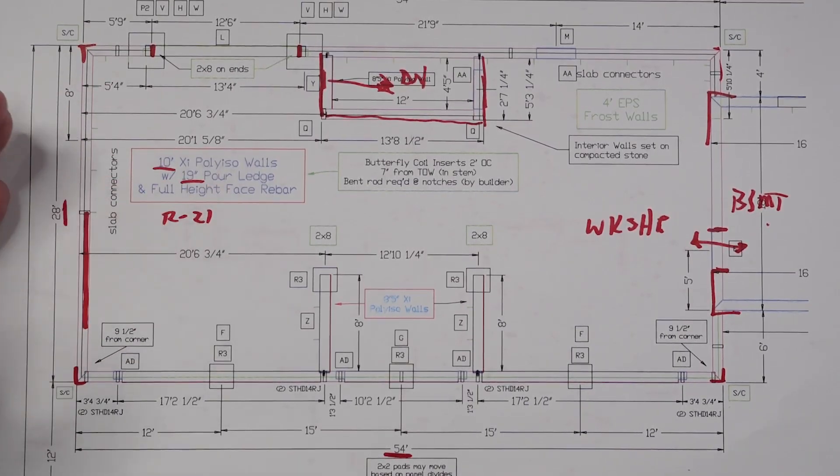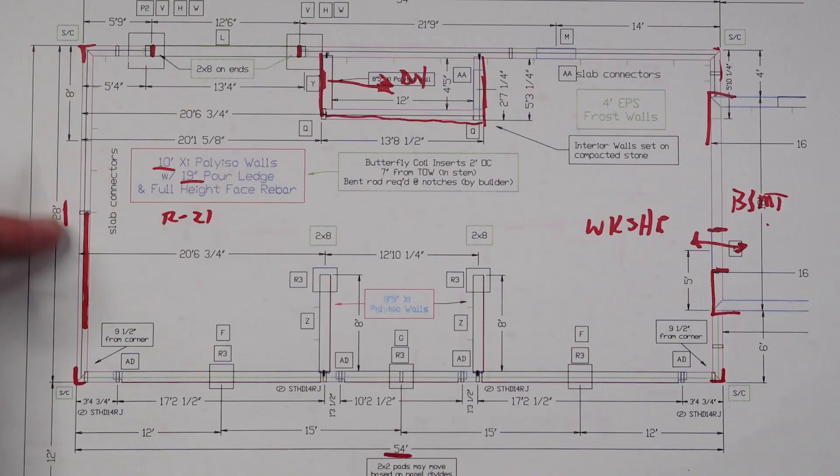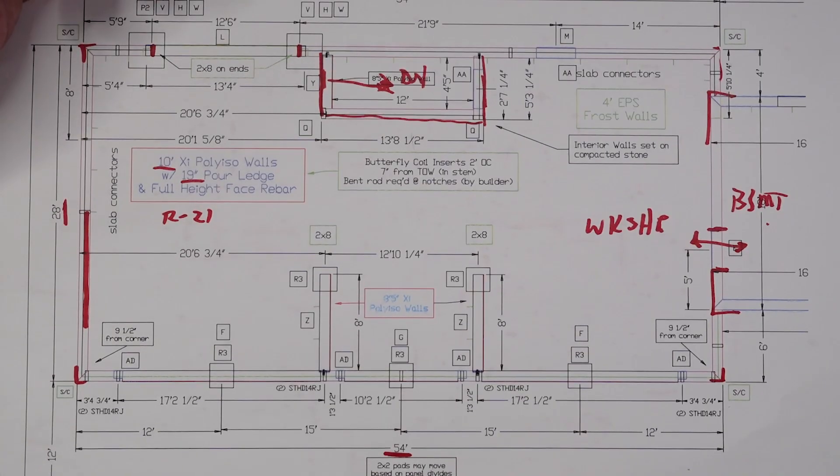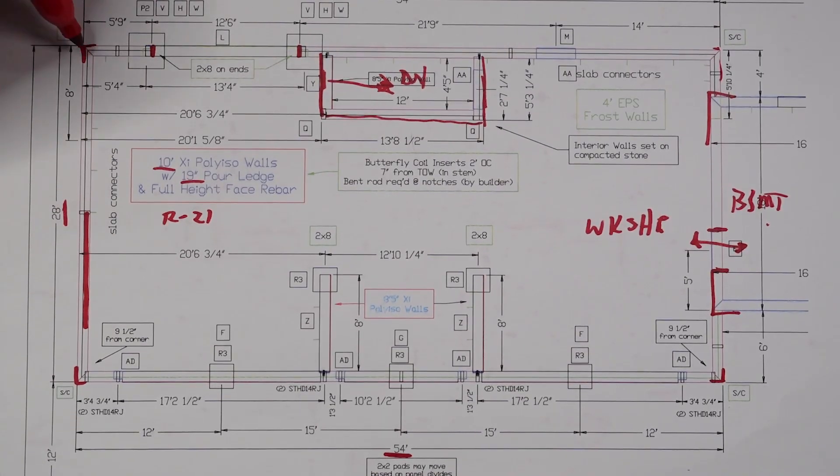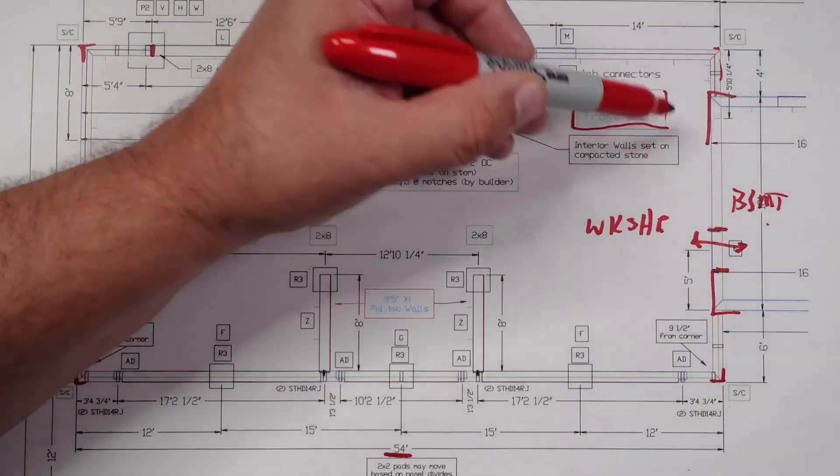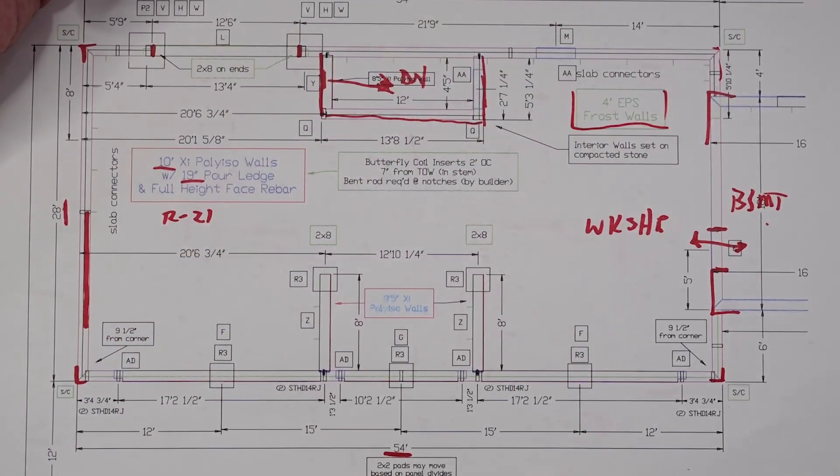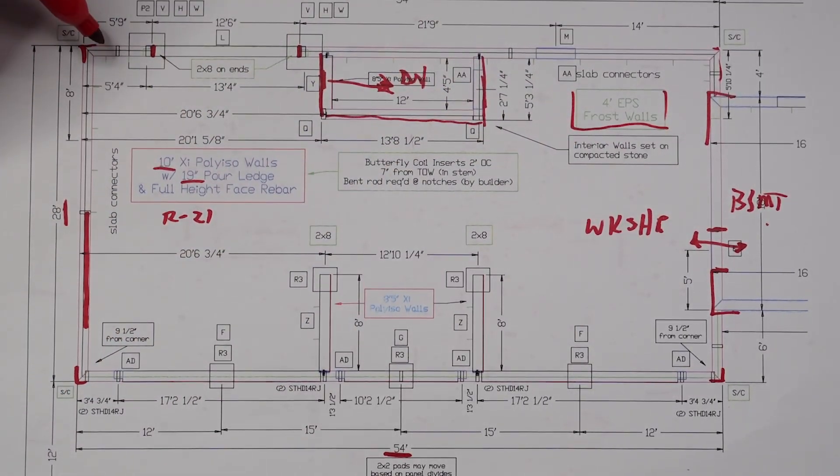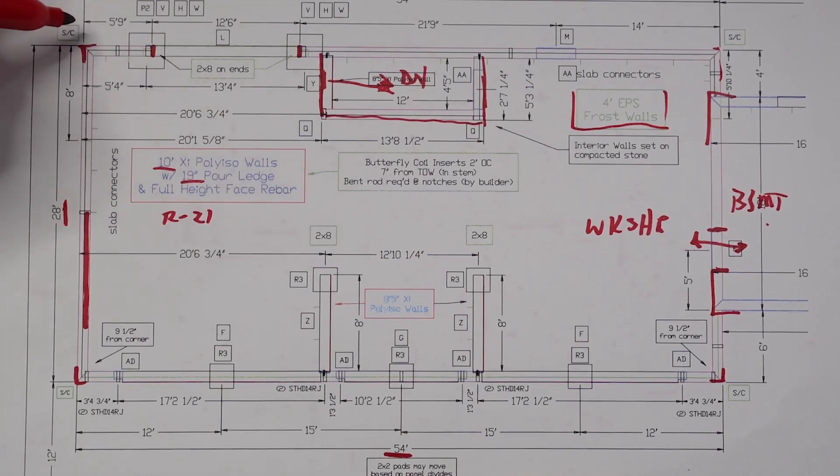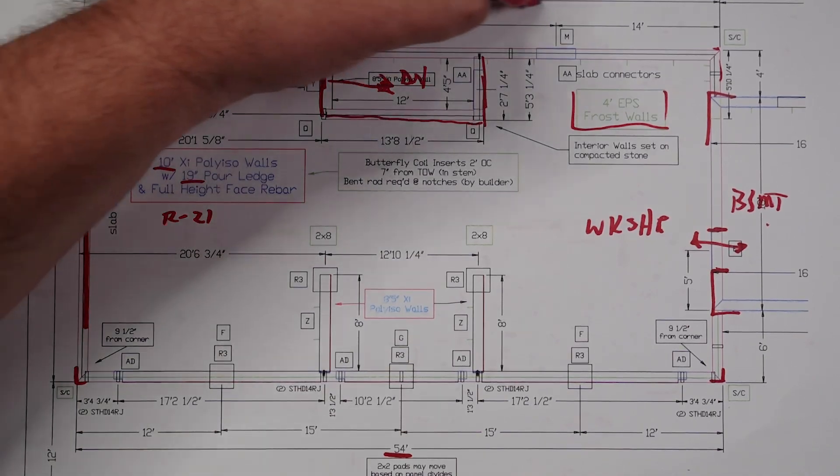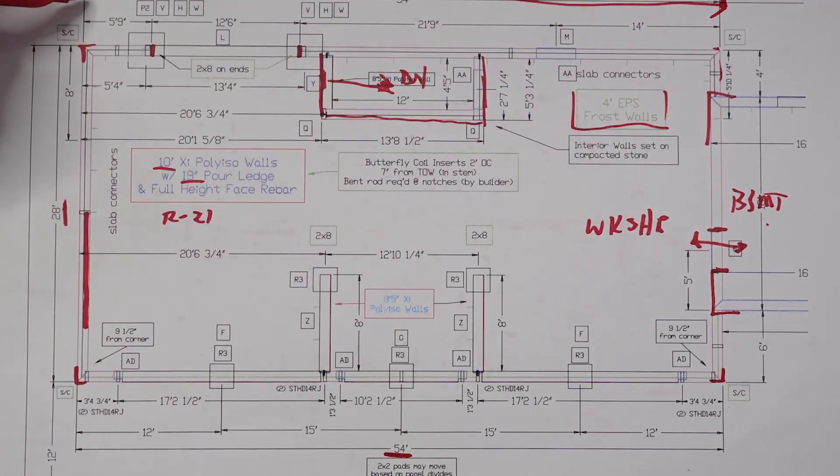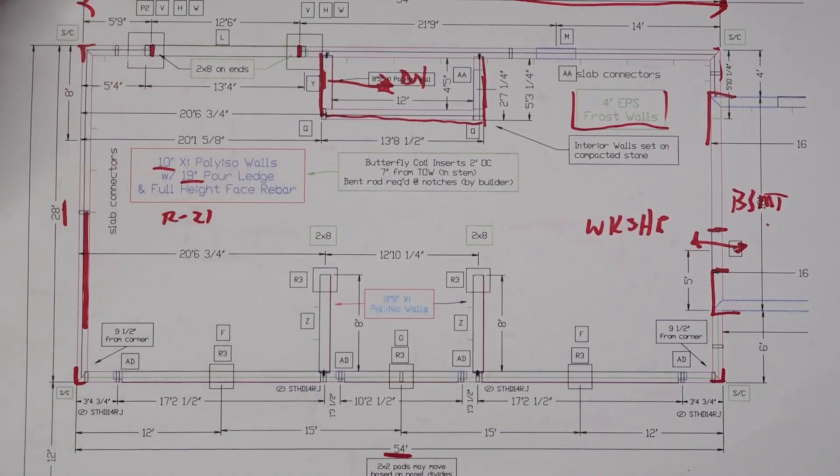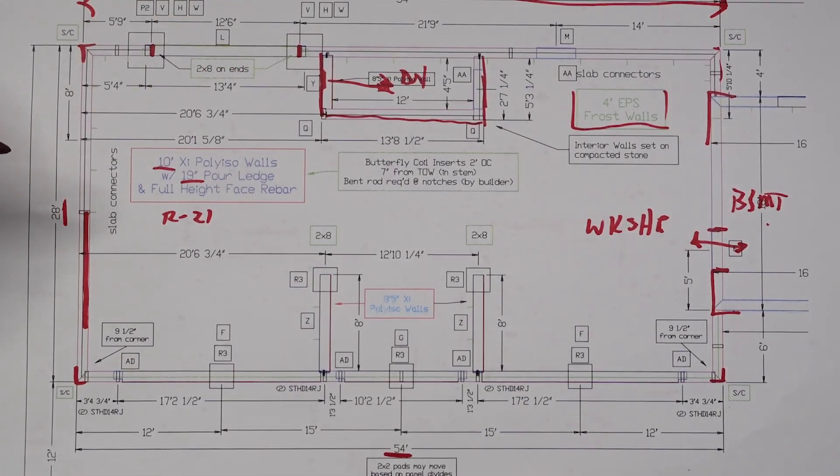But the important thing here is we have a 19-inch pour ledge. So we have that ledge that goes around. And that's what our 10-inch precast slabs are sitting on there. So that's all been predetermined. And then obviously full face height rebar to stiffen that wall. And along the backside here, notice we have it called out here, those are 4-inch EPS frost walls. So because this is a walkout, this whole length of 54 feet here has a frost wall underneath that these walls are then set on top of. So we have basically 14 feet of foundation wall on the backside here.